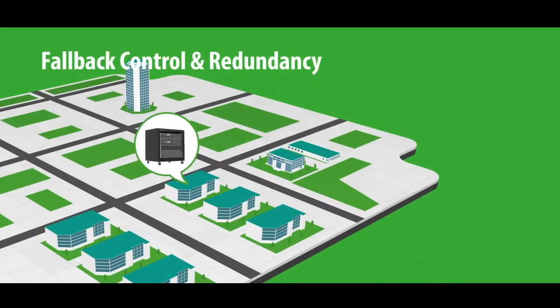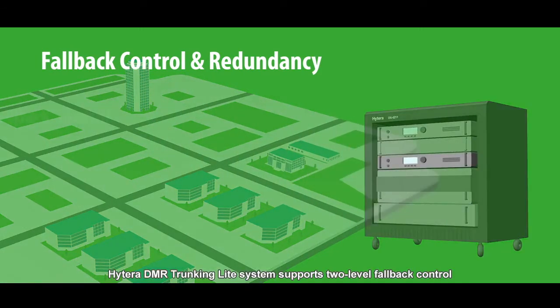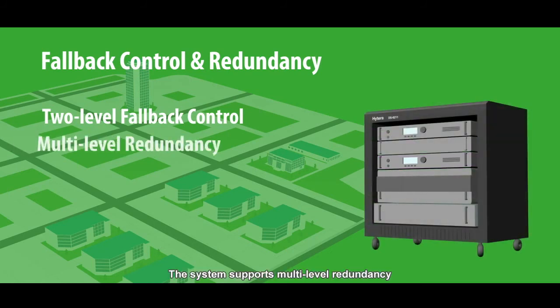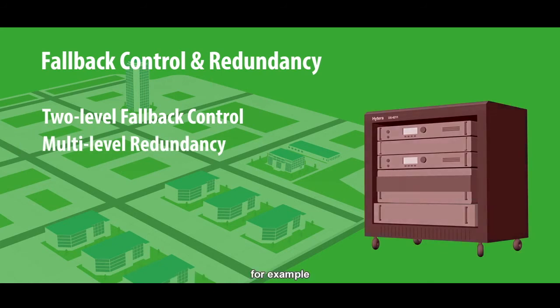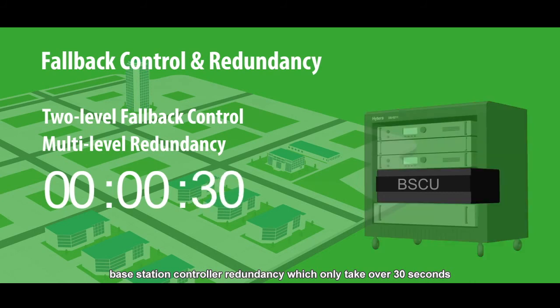Failure? No panic. Hytera DMR trunking light system supports two-level fallback control, which ensures system running in case of failure. The system supports multi-level redundancy. For example, base station controller redundancy, which only takes over 30 seconds.